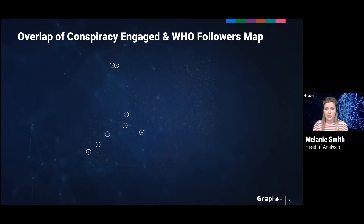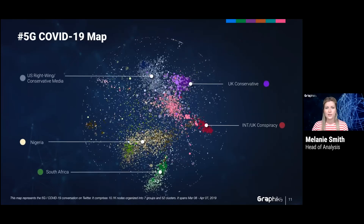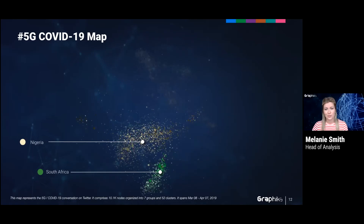I've seen this in many contexts — with communities that refute the evidence of chemical attacks in war zones, or those that vehemently reject any evidence of climate change. It's also important to unpack the narratives at play. In each of these networks, there are geographic communities that allow for the tailoring of mis- and disinformation narratives to make them more salient for local audiences. For example, one of the most popular misinformation narratives around COVID-19 has been 5G. Actors leveraged existing fears about the technology in countries like Nigeria and South Africa, highlighted on the map here.